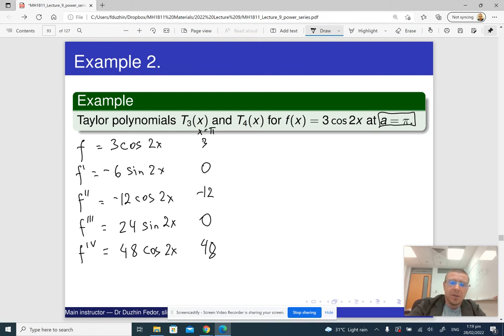All right, so how do we find the corresponding coefficient? We also need to find n factorial. So what is n factorial? 0 factorial is 1, 1 factorial is 1, 2 factorial is 2, 3 factorial is 6, and 4 factorial is 6 times 4 is 24.